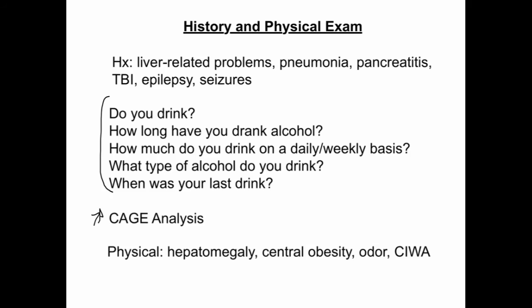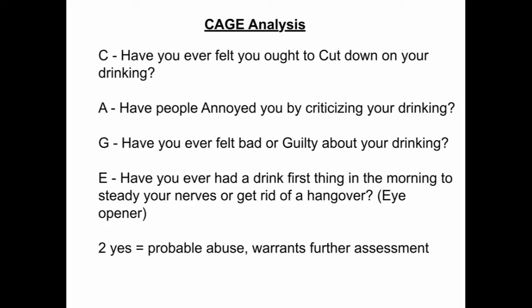A CAGE analysis is used to determine the probability of alcohol abuse. The questions are: C — Have you ever felt you ought to cut down on your drinking? A — Have people annoyed you by criticizing your drinking? G — Have you ever felt bad or guilty about your drinking? E — Have you ever had a drink first thing in the morning to steady your nerves or get rid of a hangover? This is considered an eye-opener.